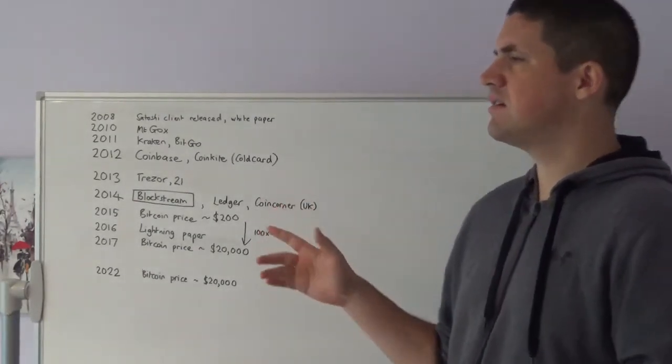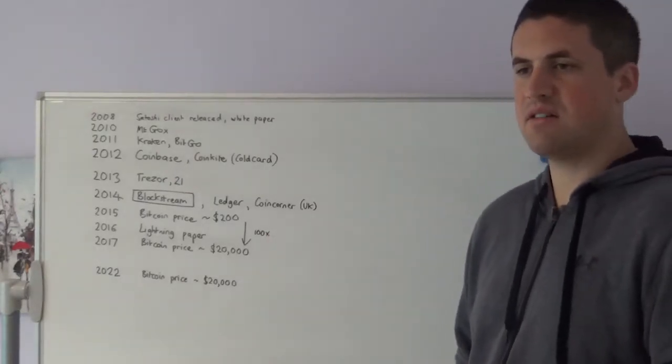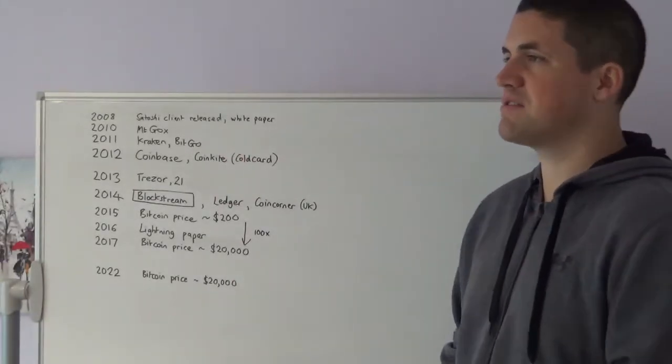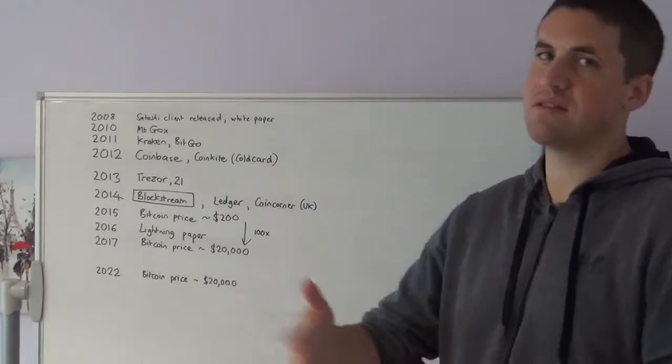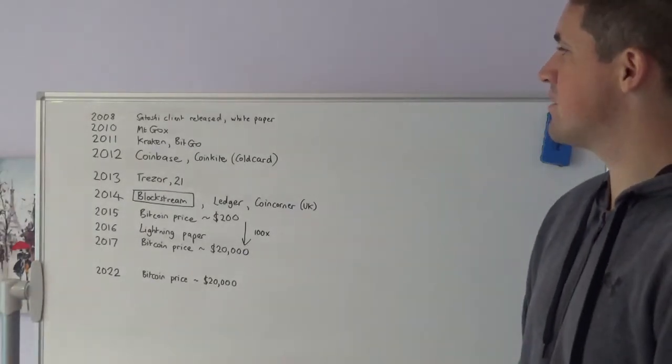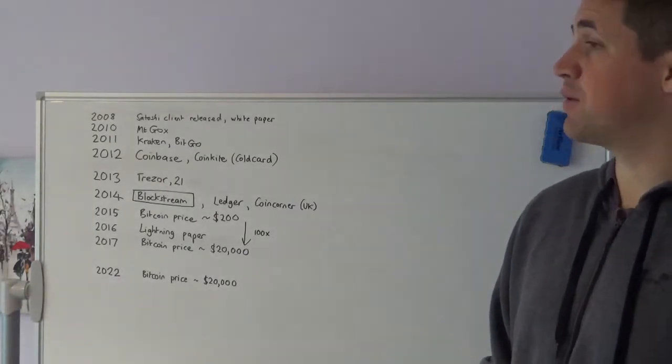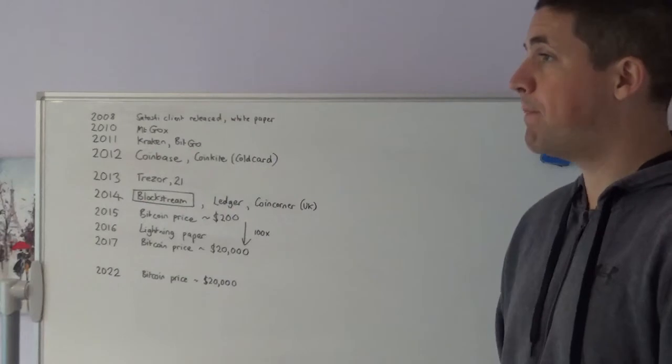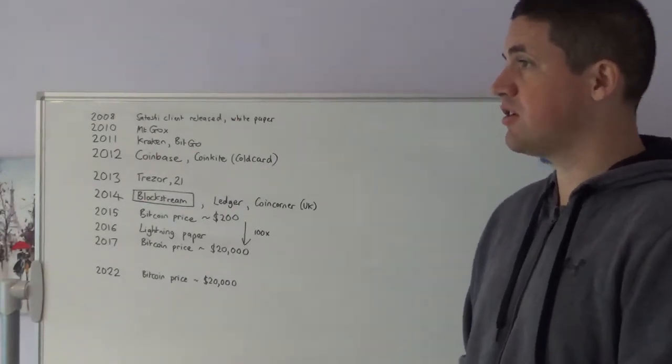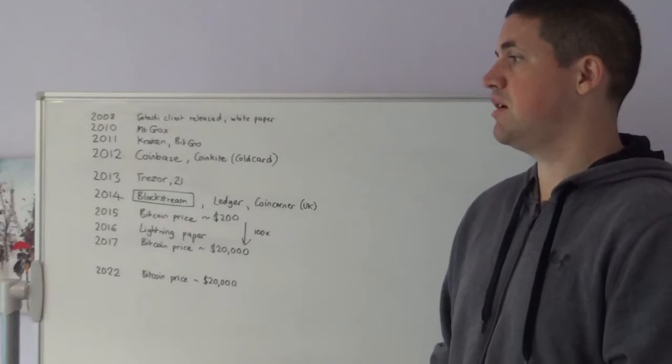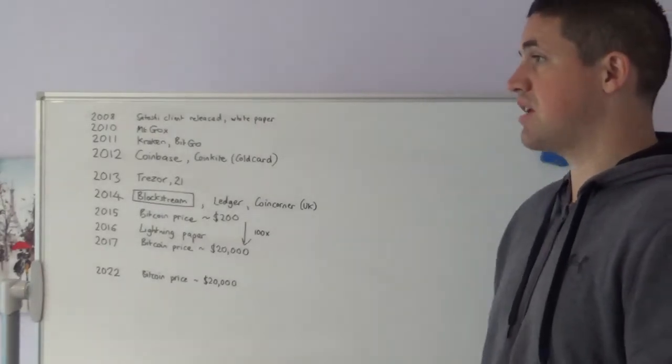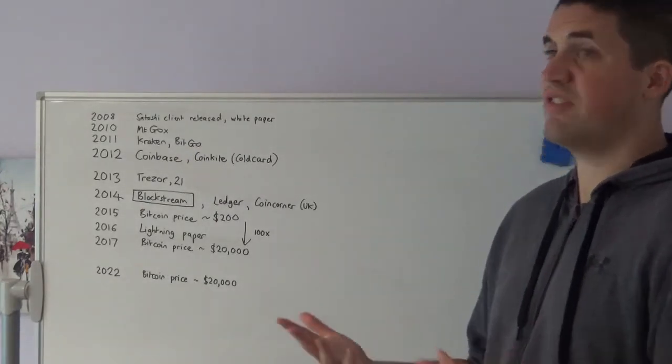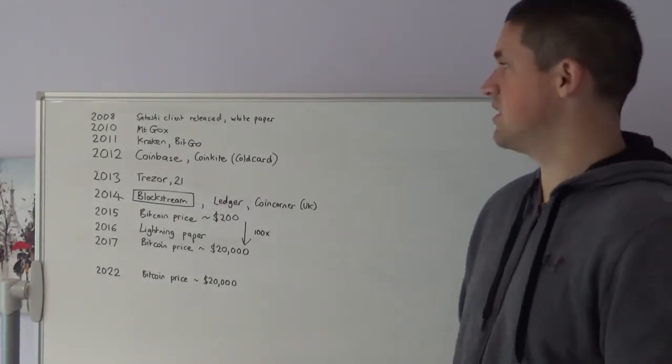Up until then, it wasn't really clear that Bitcoin had a market price and so people were quite happy just to give out large amounts of Bitcoin for nothing or buy pizzas with thousands of Bitcoin. This was the first, and I would argue, partially successful attempt to prove there's demand and a viable exchange business model.